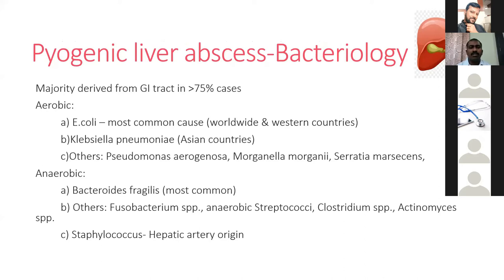The bacterial pathology in pyogenic liver abscess: most bacteria are derived from the GI tract — around 75% — and include both aerobic and anaerobic organisms. The most common organism is E. coli, most common in Western countries, whereas Klebsiella pneumoniae is most common in Asian countries. Other organisms include Pseudomonas; the most common anaerobe is Bacteroides fragilis. In hepatic artery origin abscesses, Staphylococcus is more common.